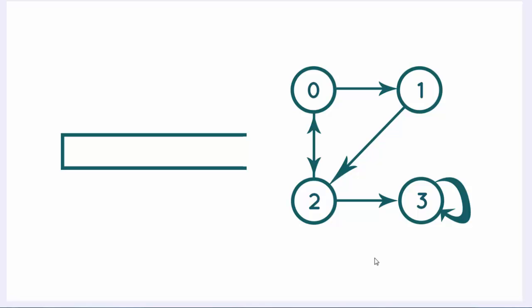The depth-first search works in a similar fashion. Here we have a graph with nodes 0, 1, 2, and 3. Node 0 is connected to 1 and 2. Node 2 is connected to 3 and 0. Node 1 is connected only to 2. To perform the DFS, you use a stack, which will collect our nodes as we go through them.